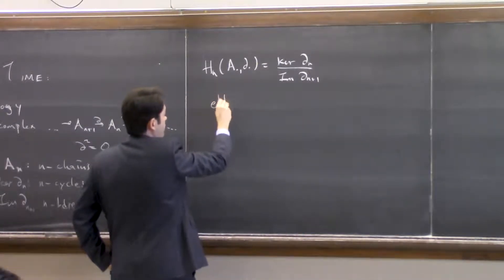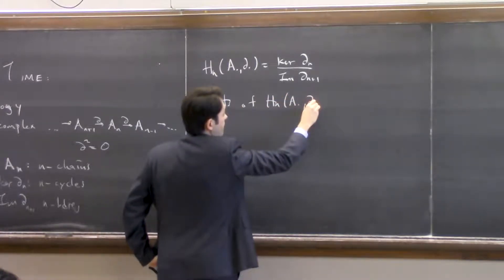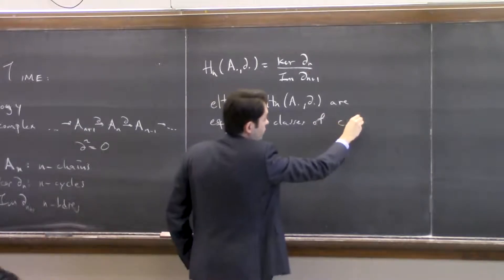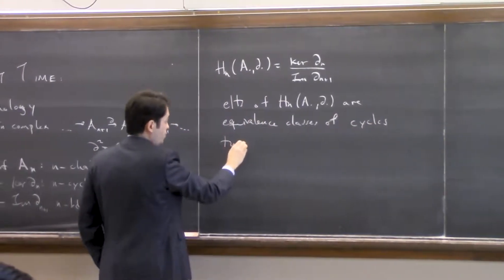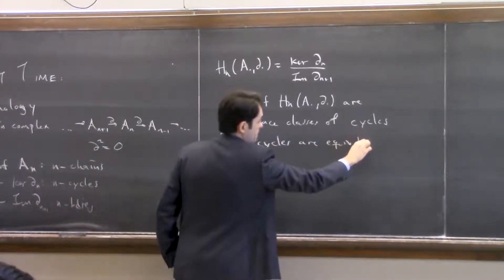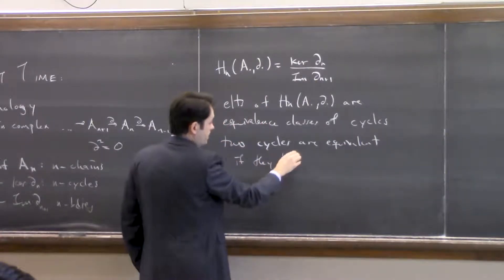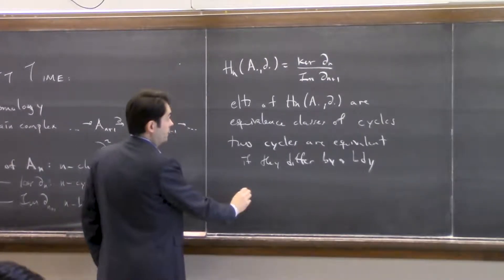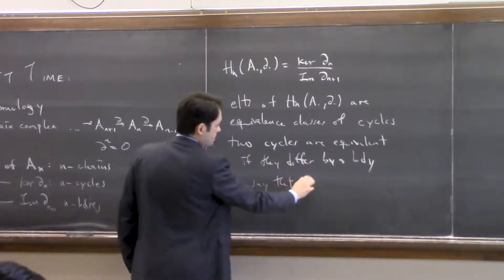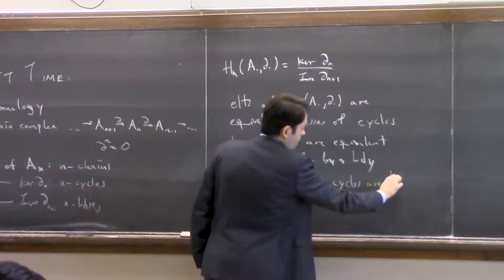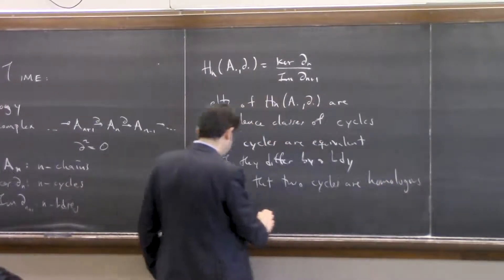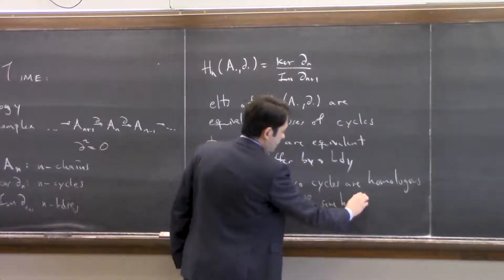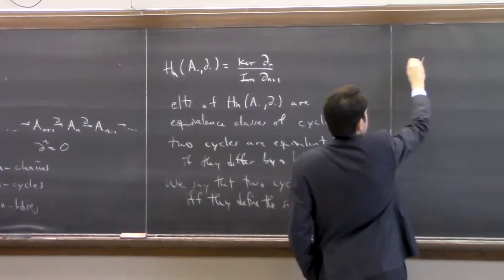Elements are equivalence classes. Two cycles are equivalent if they differ by a boundary, because we're modding out by boundaries. For this reason, we say that two cycles are homologous if they define the same homology class, which is the same as saying they differ by a boundary.